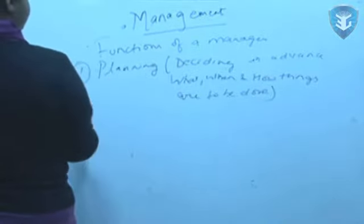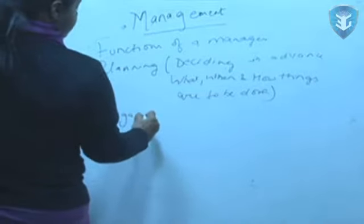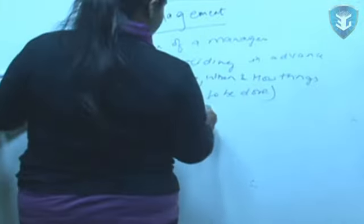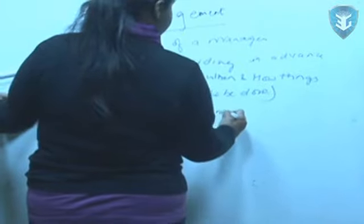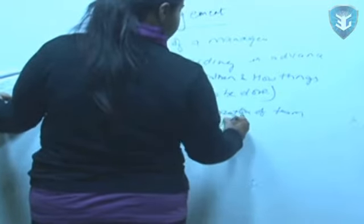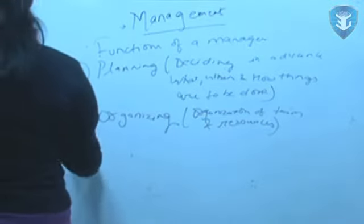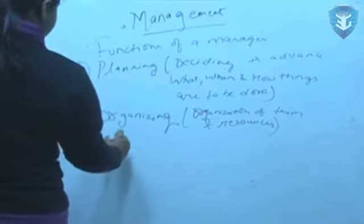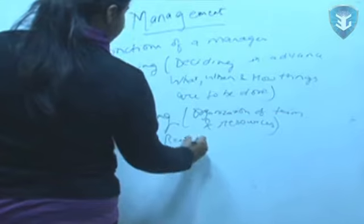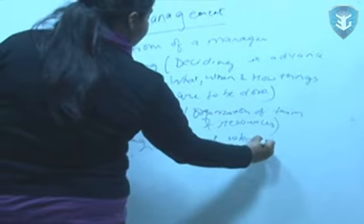In this case you have not yet started with the implementation, you are only deciding in advance how the process will continue. Second is your organizing. Organizing means organizing first of all the team who will do the task and secondly the resources that they will be using for successful accomplishment of the objectives. Third is your staffing. It is a human resource function which includes your recruitment followed by selection followed by training.